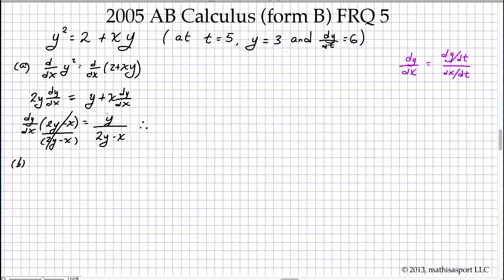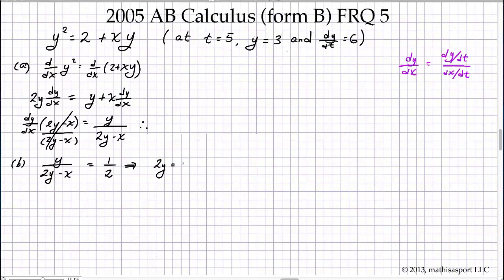Now we move on to the case where they'd like to know what points on the curve have a tangent line with slope 1/2. We set the derivative equal to 1/2 to see what constraints that imposes on y and x. Simply cross-multiplying leads us to 2y equals 2y minus x, which further implies that x must be 0.